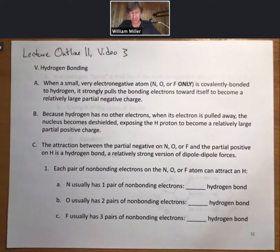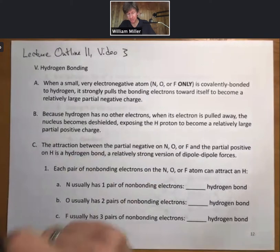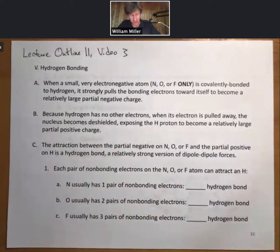We want to be very specific about what hydrogen bonding is. When a small, very electronegative atom (nitrogen, oxygen, or fluorine only) is covalently bonded to hydrogen, it strongly pulls the bonding electrons toward itself to become a relatively large partial negative charge.